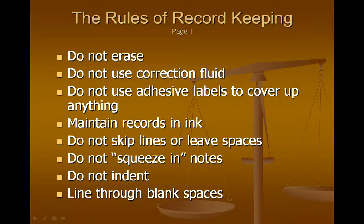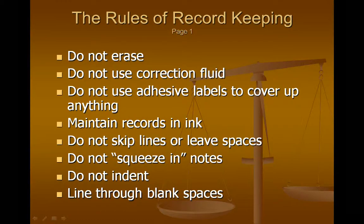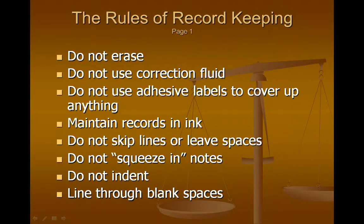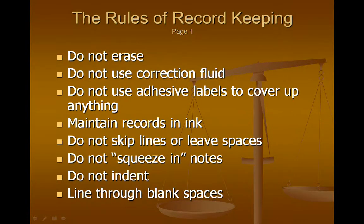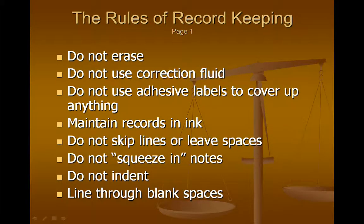General rules for record keeping: as I talk about these, I'll usually discuss them in the context of paper records, though they apply by and large to computerized records as well. The first group of rules: do not erase, do not use correction fluid (white-out), don't use adhesive labels to cover up anything. Keep your records in ink. If you make a mistake, you want to correct it appropriately — you don't want to hide the mistake. You don't want to create an appearance that records were kept in pencil so you could erase things, or that white-out was used to cover mistakes.